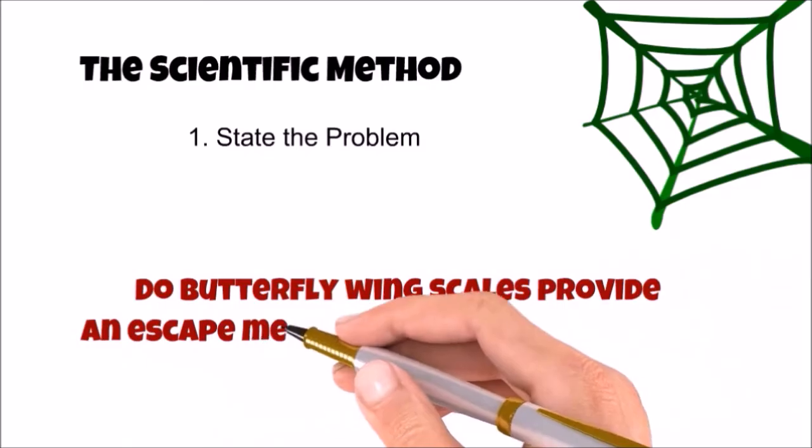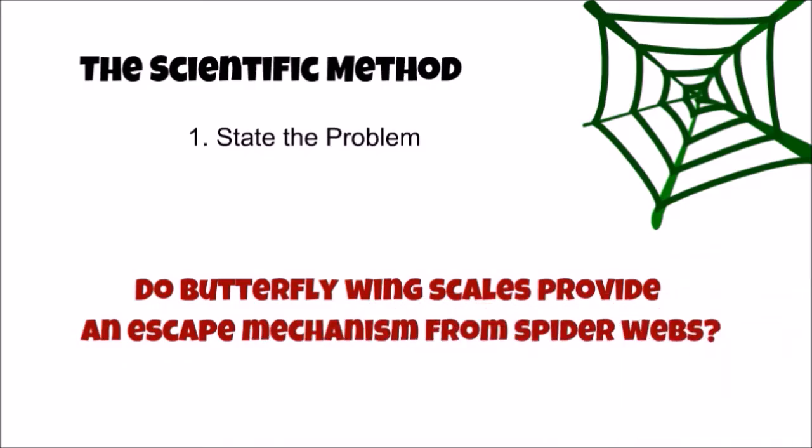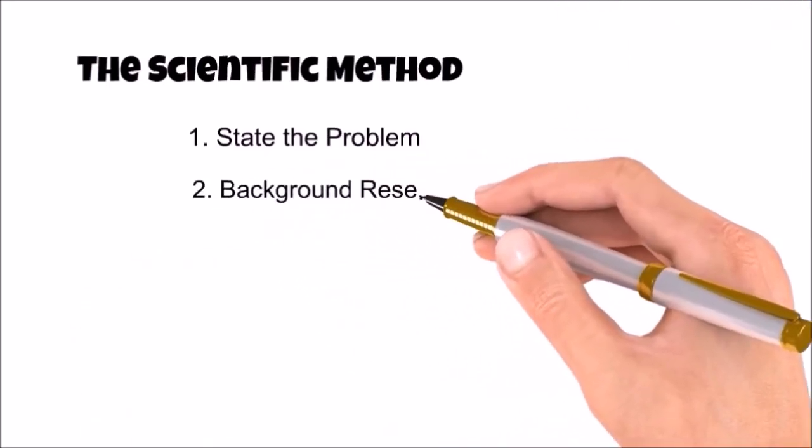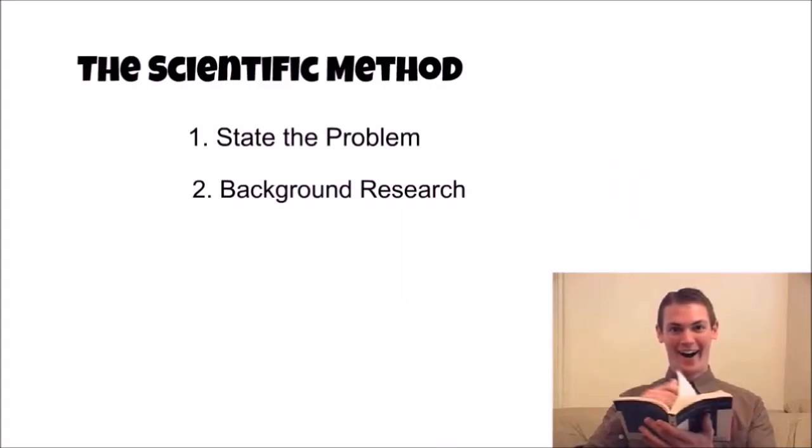So the problem question became: do butterfly wing scales provide an escape mechanism from spider webs? Once a question of study has been determined, background research on the problem should be performed. This step helps educate the scientists about the problem and also helps determine if there is already an answer to the problem question.